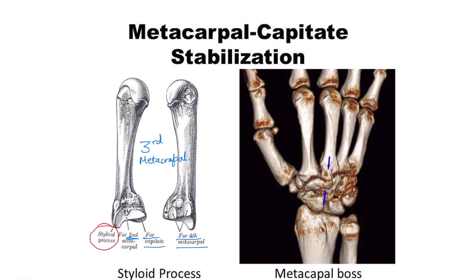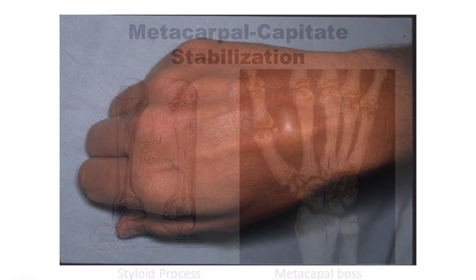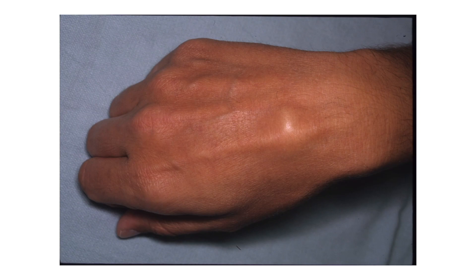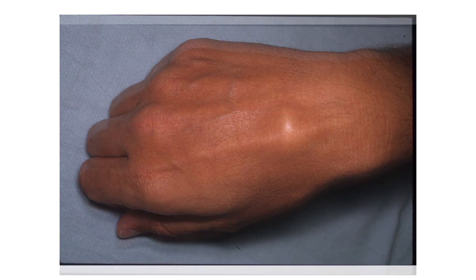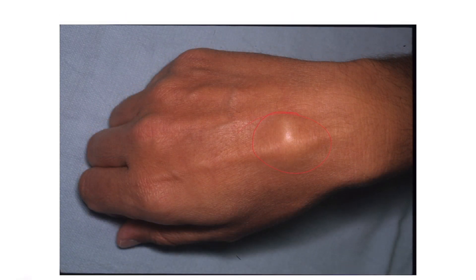The third metacarpal articulates below with the capitate bone mainly, and sometimes this overgrowth of the styloid process — called metacarpal boss or metacarpal bossing — can be seen on the dorsum of the hand just above the wrist.